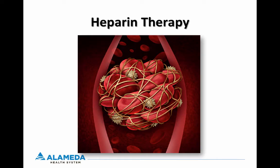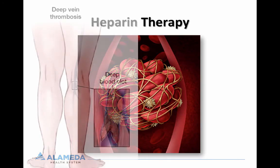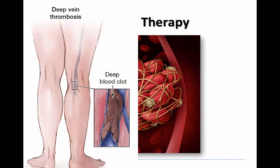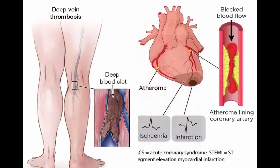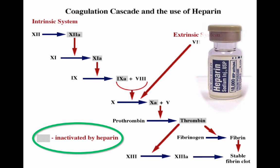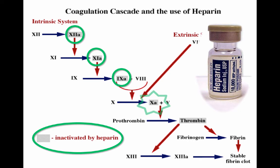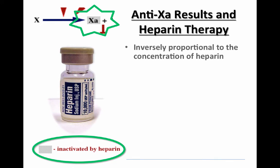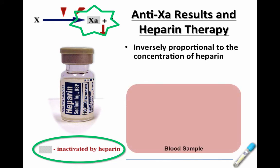We use heparin therapy for clots like deep vein thrombosis, pulmonary embolus, or acute coronary syndrome. Heparin works by inhibiting several of the clotting factors, as you can see here in the green circle, including factor Xa and also thrombin. When we draw and send an anti-Xa lab on our heparinized patients and get the results back, the number that we get is inversely proportional to the concentration of heparin in the blood.